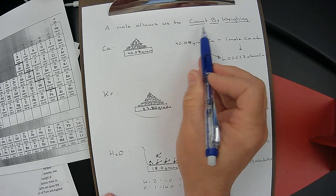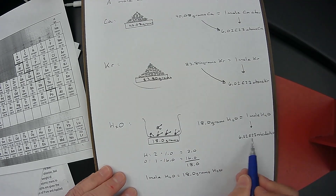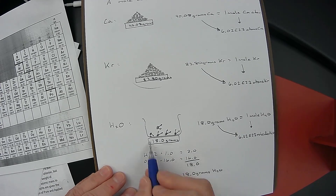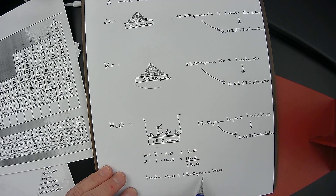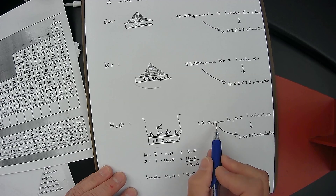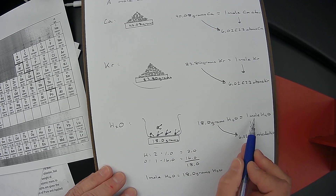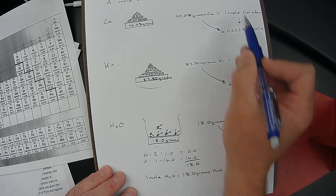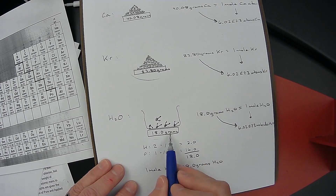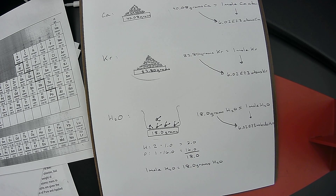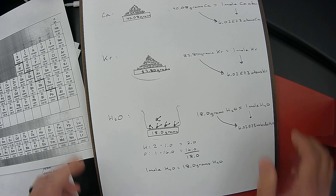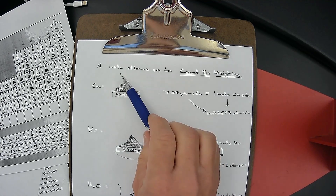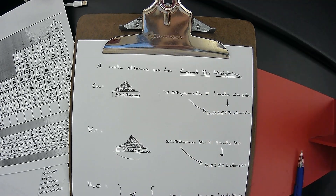We counted by weighing. We now know there are 602 billion trillion molecules of H₂O because I put on the molar mass. One mole is 18 grams, so if I measure out 18 grams, I know there's one mole — which is that many molecules. Just like putting on a pair means 2, and a dozen means 12, putting on a mole means 602 billion trillion. By putting that mass on the balance, I know I have that many molecules of H₂O. The mole allows us to count by weighing.